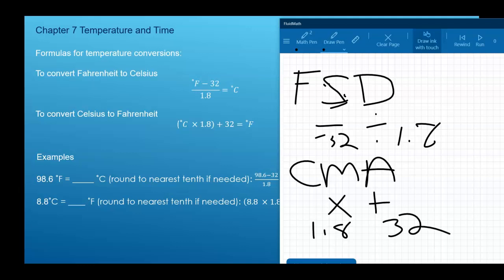So I kind of use those abbreviations to help me memorize what to do. So if I take Fahrenheit, I subtract 32, divide 1.8, I'll end up with Celsius. If I start with Celsius, I multiply 1.8, add 32, I end up with Fahrenheit.